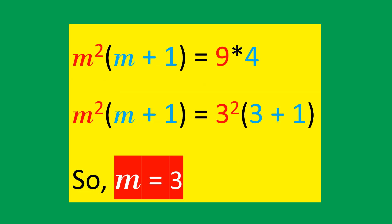Comparing the factors separately: m power 2 equal to 3 power 2, and m plus 1 equal to 3 plus 1. So we conclude m is equal to 3.